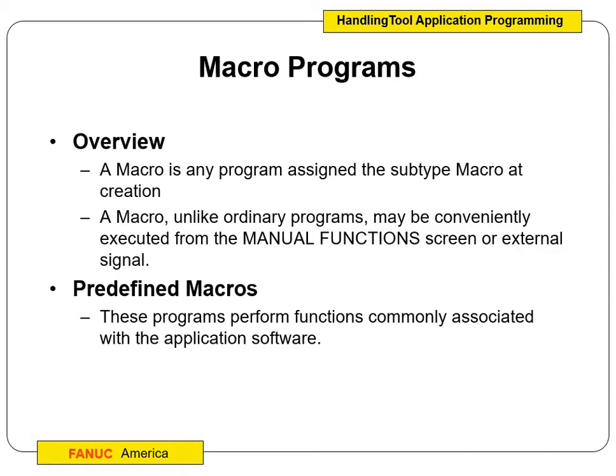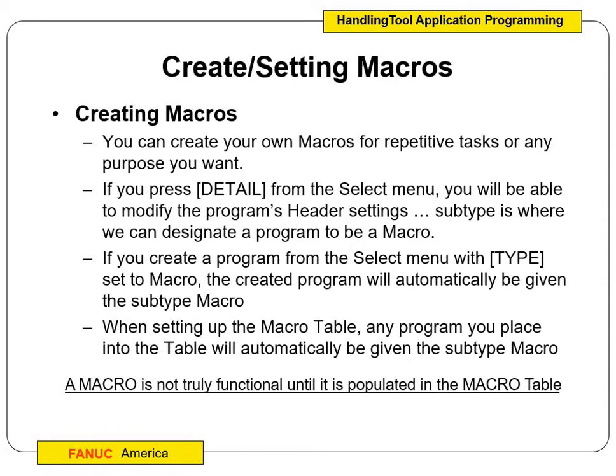A macro is like a function that we can call out, tied to a soft key or things like that. We can have predefined macros — these are programs that perform functions commonly associated with the application software. For us, predefined macros include tool one and tool two, where we open and close grippers. We can also tie them to soft keys. We create macros for repetitive tasks; that's really the whole point of a macro.